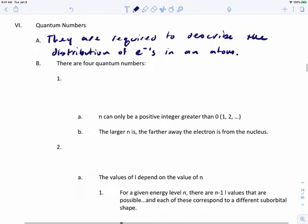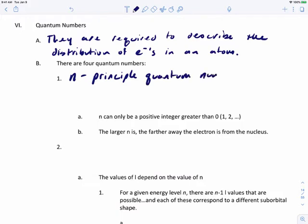Now there's four different quantum numbers, and we've actually talked about one already. We talked about n, which we call the principal quantum number. The principal quantum number is the energy level that the electron resides in.